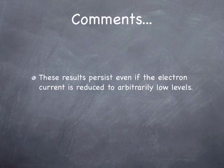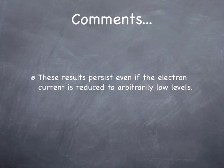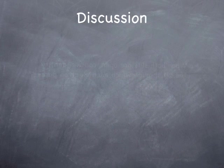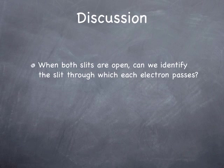Some comments. The results persist even if the electron current is reduced to arbitrarily low levels. In other words, you can dial the electron current down to the point where there's only one electron at a time in the system, and you still see the three-hump probability distribution. If you try to measure where the electron goes through, which slit they go through, the interference pattern goes away. In other words, the distribution of electrons changes so that you no longer see the interference effect.